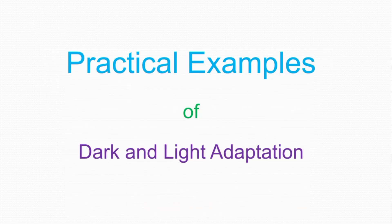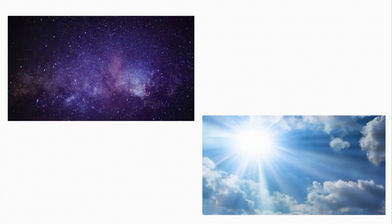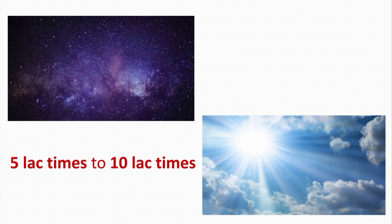Now let's see the practical examples of dark and light adaptation. Do you know that the intensity of sunlight is about 10 billion times that of starlight? Yet we are able to see both. It is because our eyes can change their sensitivity to light from 500,000 times to 1,000,000 times due to the well-developed mechanisms of dark and light adaptation. Subhanallah, Alhamdulillah.